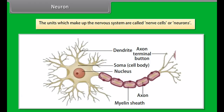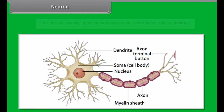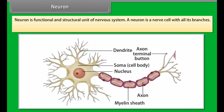The human nervous system is composed of three parts: the central nervous system (CNS), the peripheral nervous system (PNS), and the autonomic nervous system (ANS).